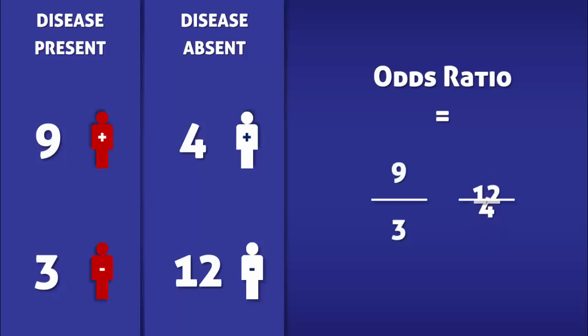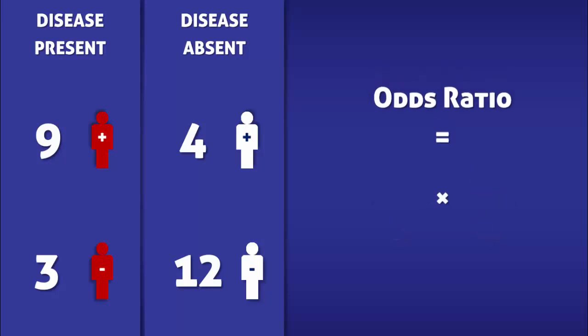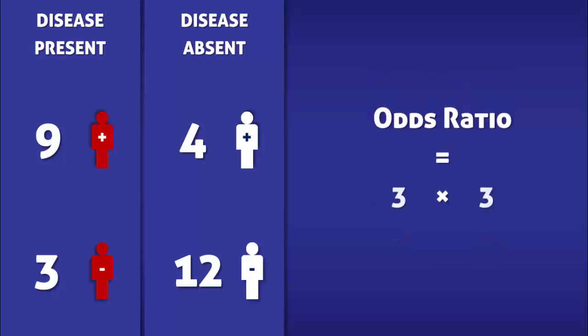So by dividing 9 over 3 by 4 over 12, we find that the odds ratio is 9.